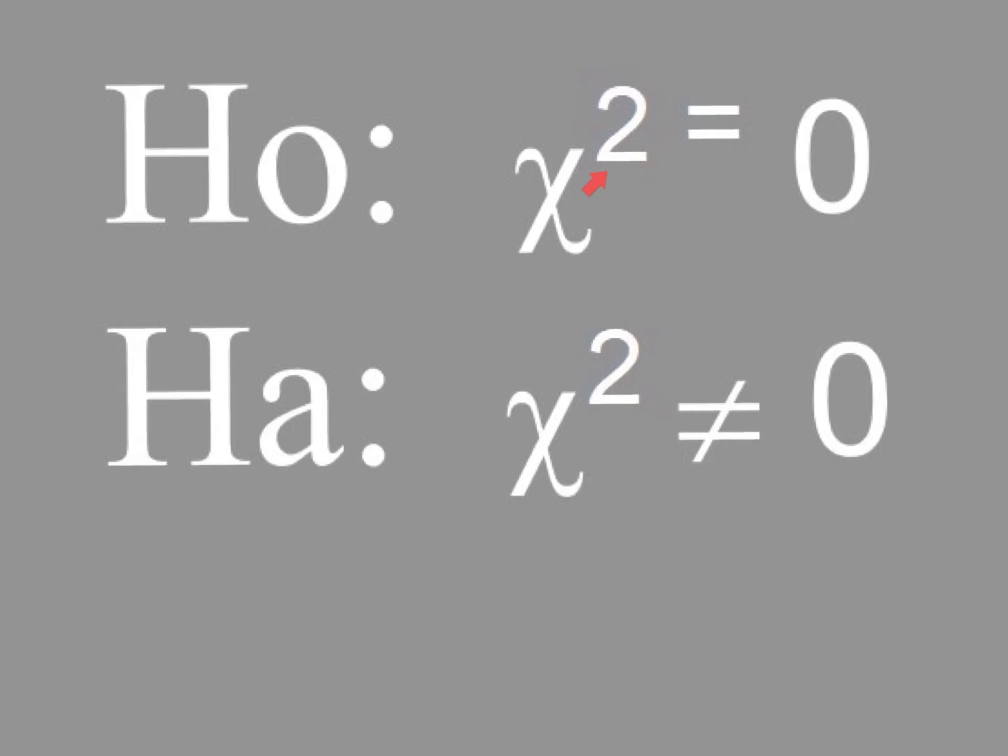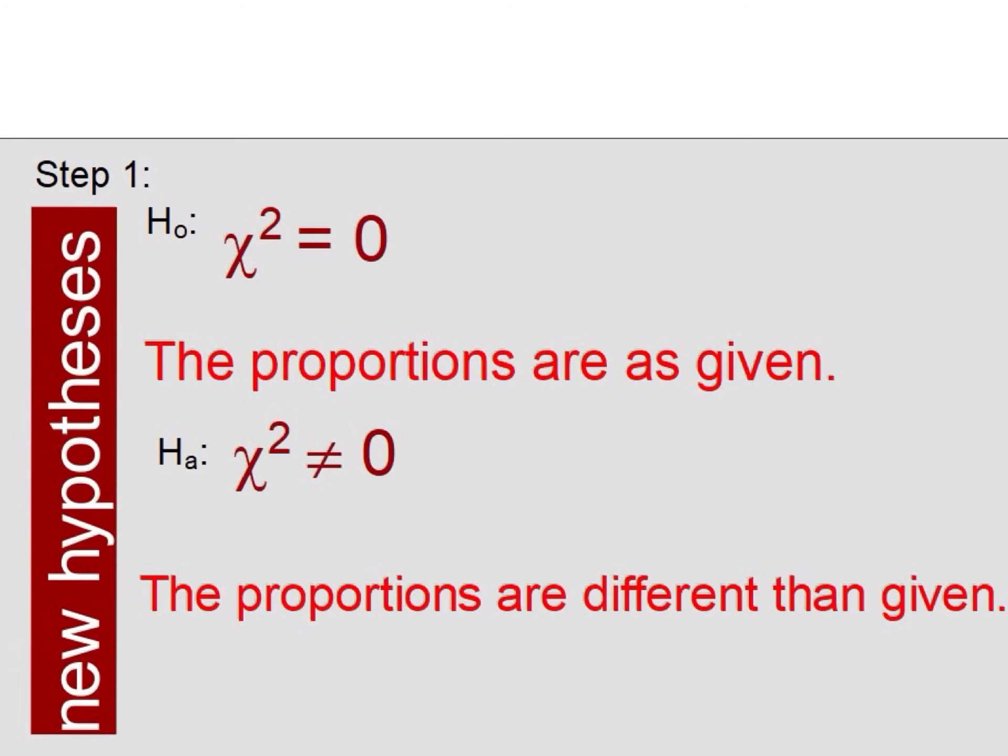This is what your hypotheses will always say. H0 says chi-square equals zero, and Ha chi-square does not equal zero. Let me explain. First of all, those symbols are really saying when chi-square equals zero, the proportions are as given. And when chi-square does not equal zero, our alternative hypothesis, the proportions are different than given.